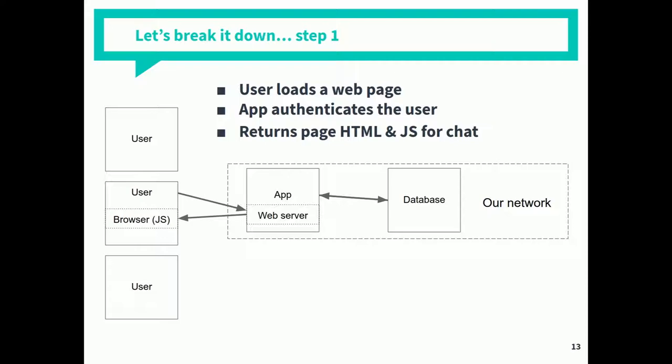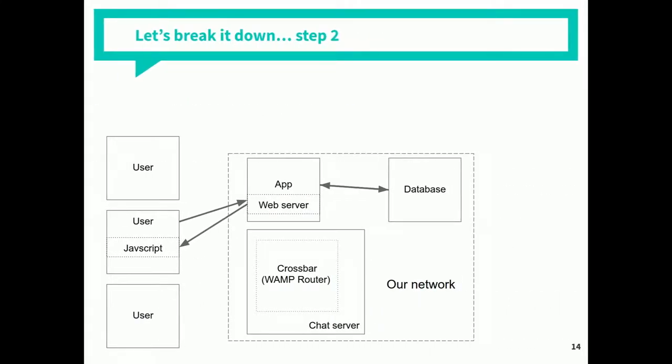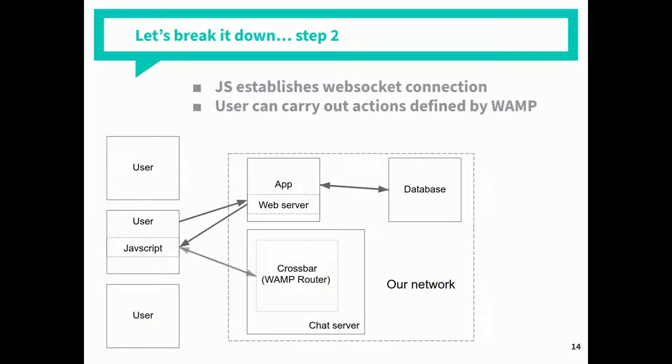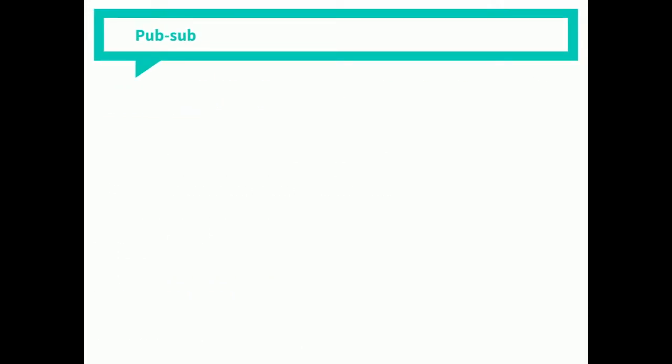And now we make a WebSocket connection. The JavaScript we've just downloaded to the user's browser runs and connects to WebSocket servers. It establishes a connection. And now, assuming our server and our client implement WAMP, we can carry out all the actions defined by WAMP. The important thing to know is: what is WAMP?